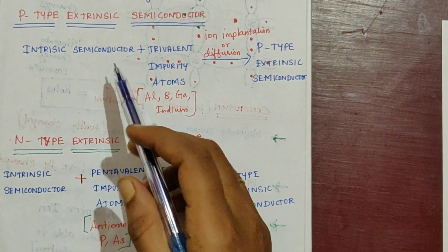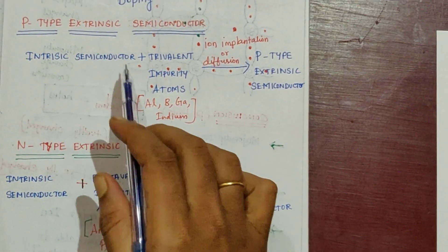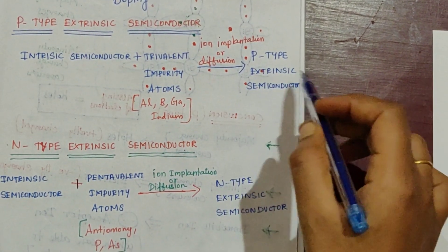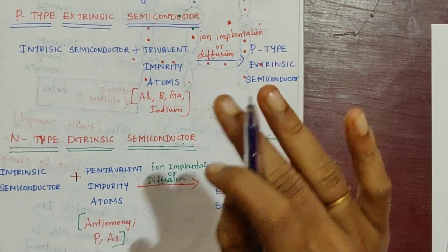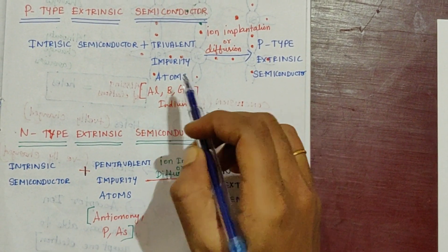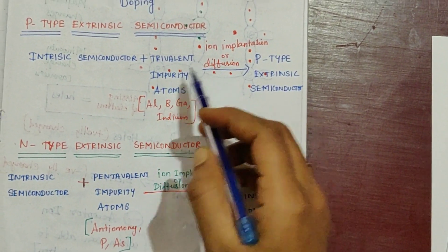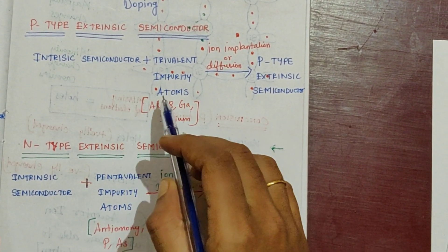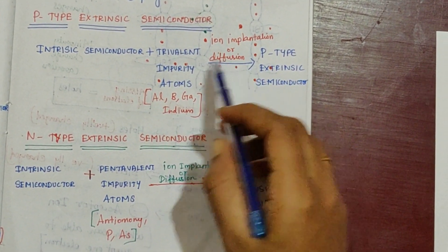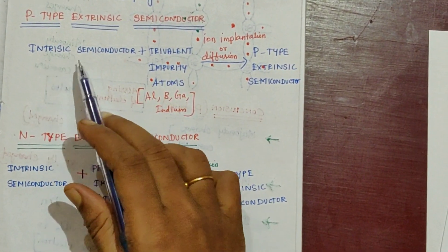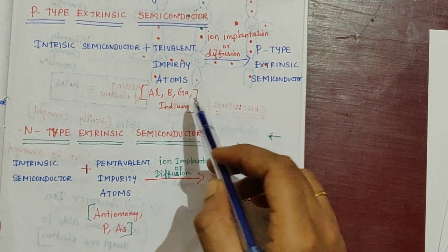For P-type extrinsic semiconductor: intrinsic semiconductor plus trivalent impurity atoms gives P-type extrinsic semiconductor. What is trivalent impurity? We know that semiconductors have exactly 4 electrons in the valence band. Trivalent atoms have 3 electrons, so that is trivalent impurity. We can add impurity by ion implantation or diffusion. Examples of trivalent impurity: boron, gallium, indium.